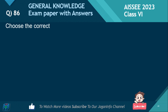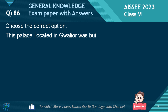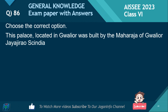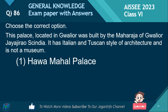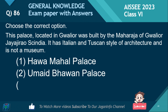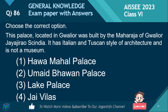Choose the correct option. This palace, located in Gwalior, was built by the Maharaja of Gwalior, Jayaji Rao. It has Italian and Tuscan style of architecture and is now a museum. Options: Hawa Mahal Palace, Umaid Bhawan Palace, Lake Palace, Jai Vilas Palace. The right answer is Jai Vilas Palace.